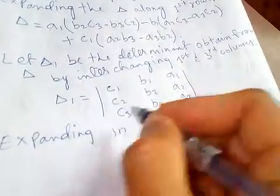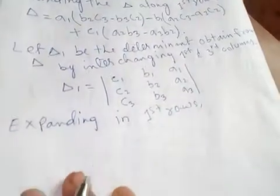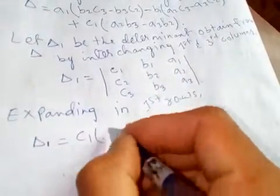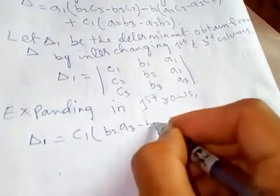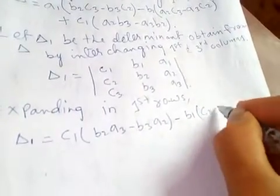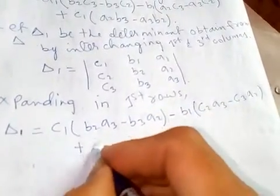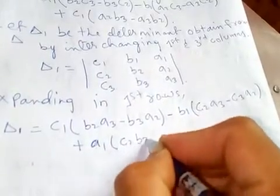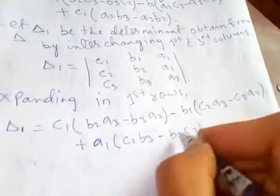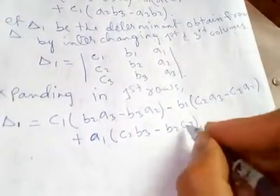Expanding Delta_1 along the first row gives: c1·(b2·a3 minus b3·a2) minus b1·(c2·a3 minus c3·a2) plus a1·(c2·b3 minus b2·c3). Since multiplication is commutative, we can rearrange the factors.